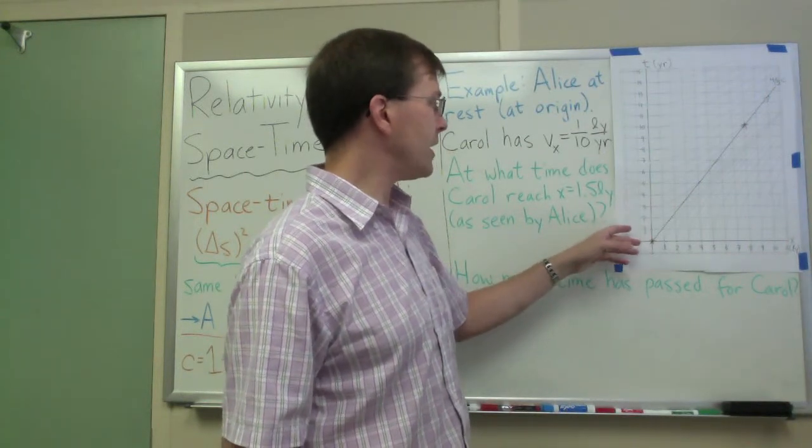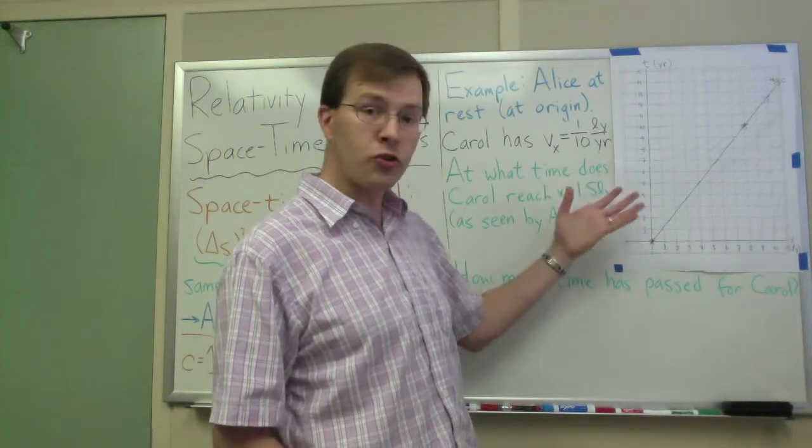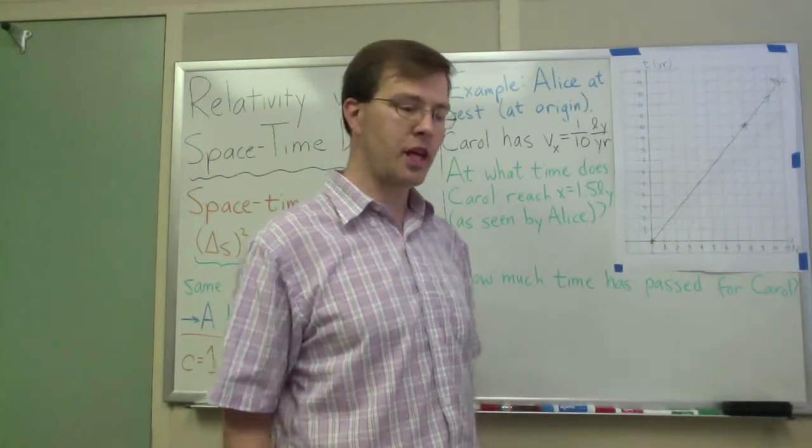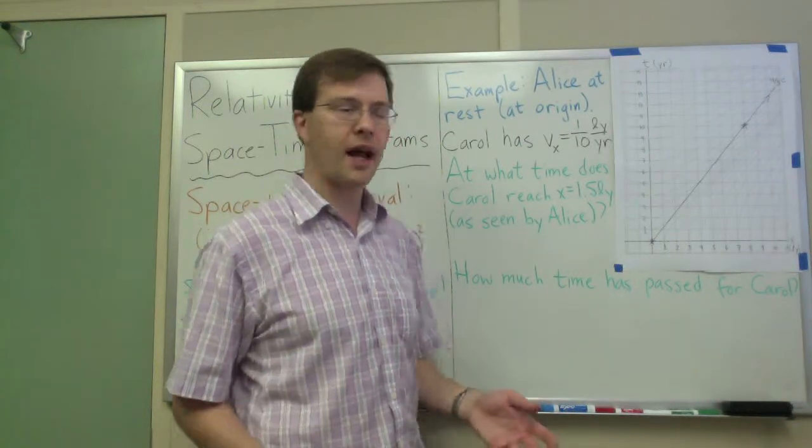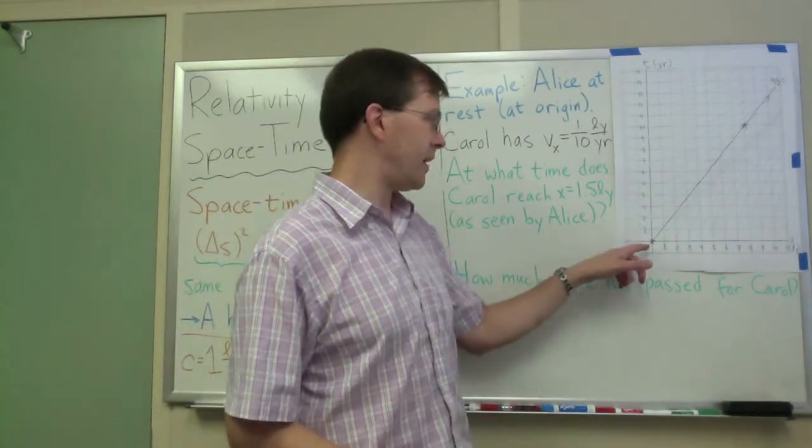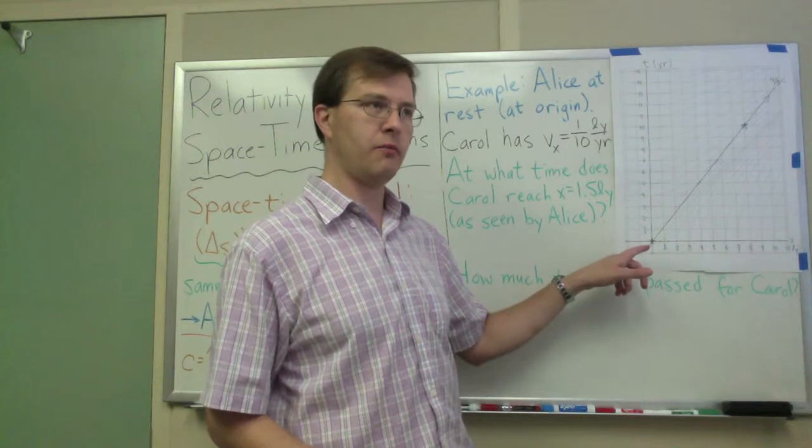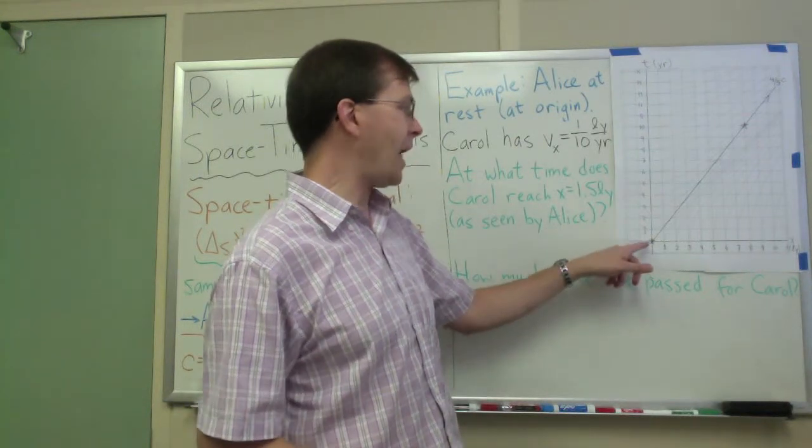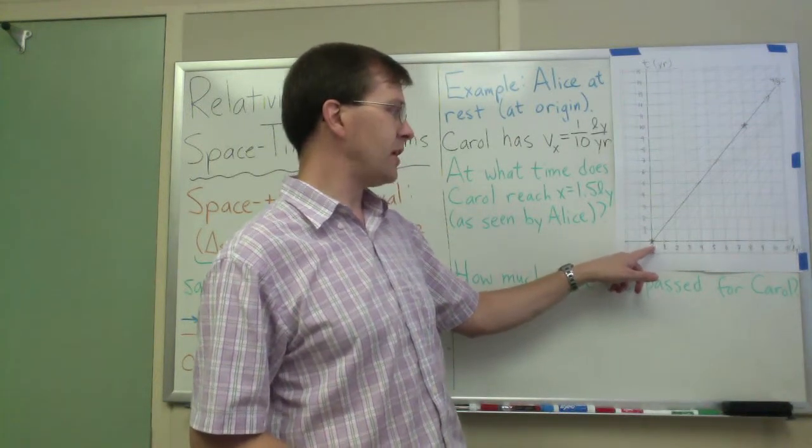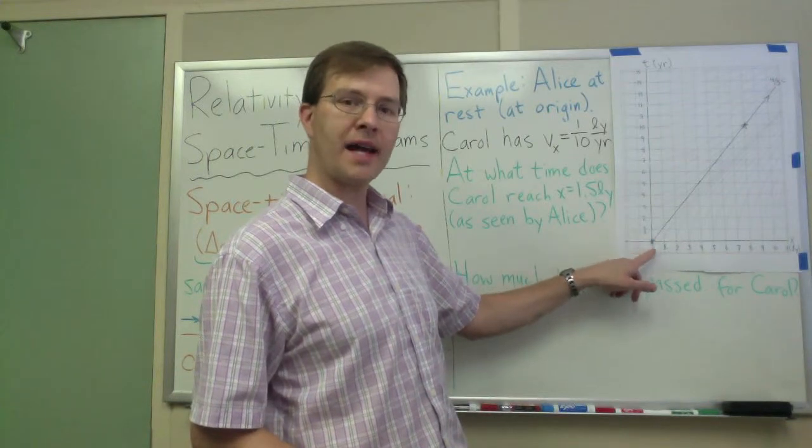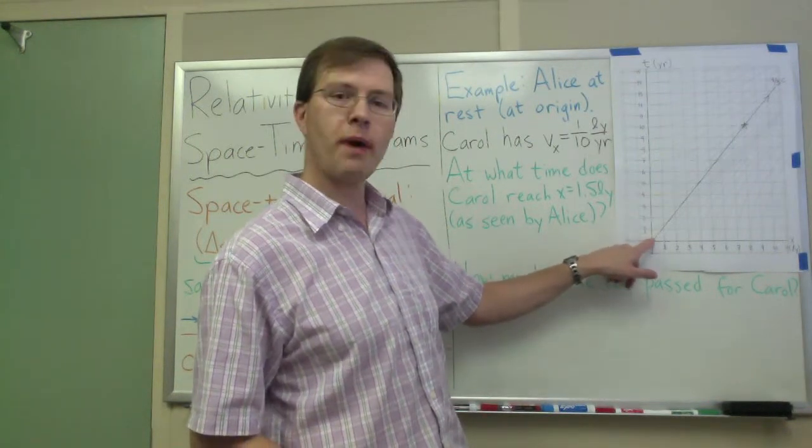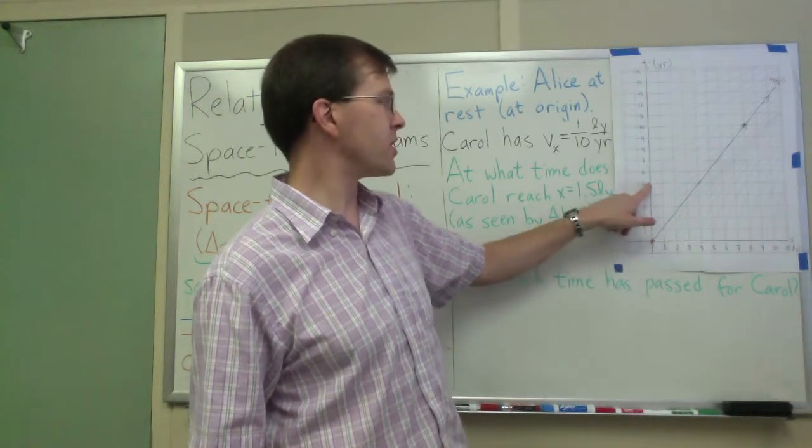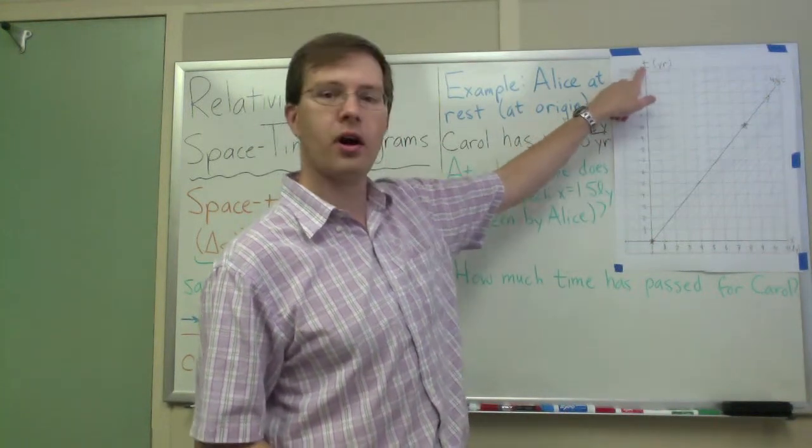Right now, I want to do a quick example, different from the ones I've done before. In particular, I'm going to have Alice be my stay-at-home watcher of all things. Alice is sitting still in this reference frame and passes through the origin. She lives at x equals 0 and is just sitting still. So her path through space and time is a straight vertical line going up along this graph.